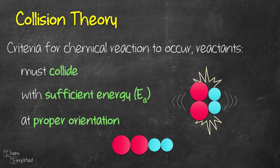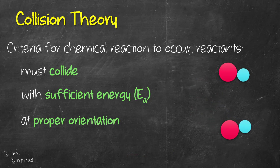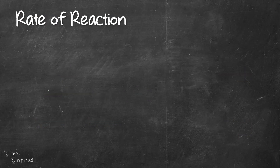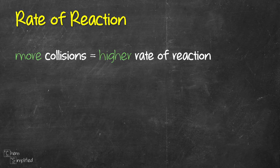Once the reactant particles fulfill these three criteria, that's how new products are formed — that's when a chemical reaction has occurred. Now we move on to the rate of the reaction. Basically, when the number of collisions increases, the rate of the reaction will increase as well.